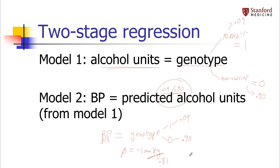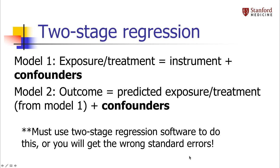The good thing about two-stage regression is that now you can incorporate confounders. If there's an imbalance in measured confounders in the instrument groups, you can adjust for that, and you do so by putting those confounders into your two-stage regression — you must put the same confounders in both stages. Also, you don't want to do this two-stage regression manually — if you separately fit a first-stage model and then run a regular regression on those predicted values, you won't get the correct standard errors. You need to use specialized two-stage regression software to get correct standard errors.